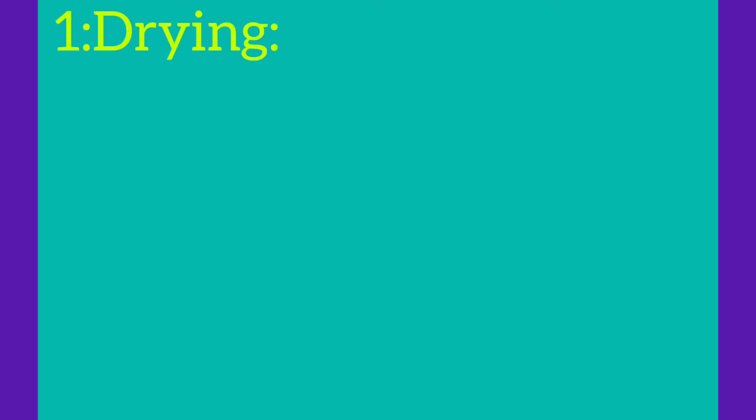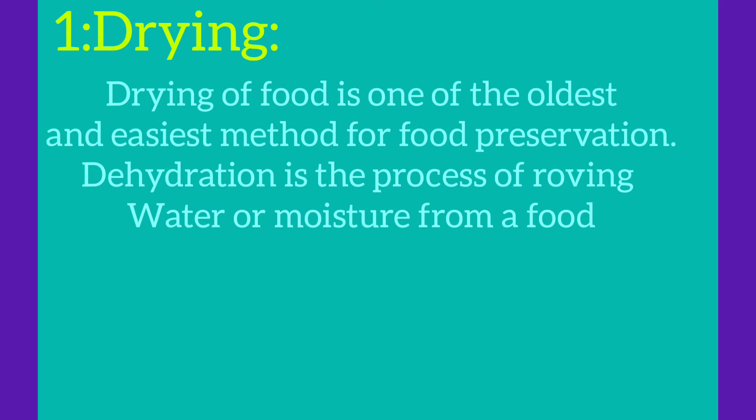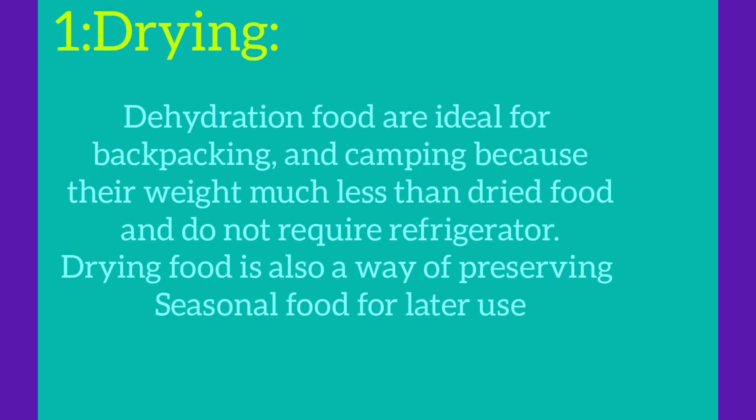The first and most common method is drying. Drying, or dehydrating food, is one of the oldest and easiest methods of food preservation. Dehydration is the process of removing water or moisture from a food product. Dehydrated foods are ideal for backpacking, hiking, and camping because they weigh much less and do not require refrigeration. Drying food is also a good way to preserve seasonal food for later use.